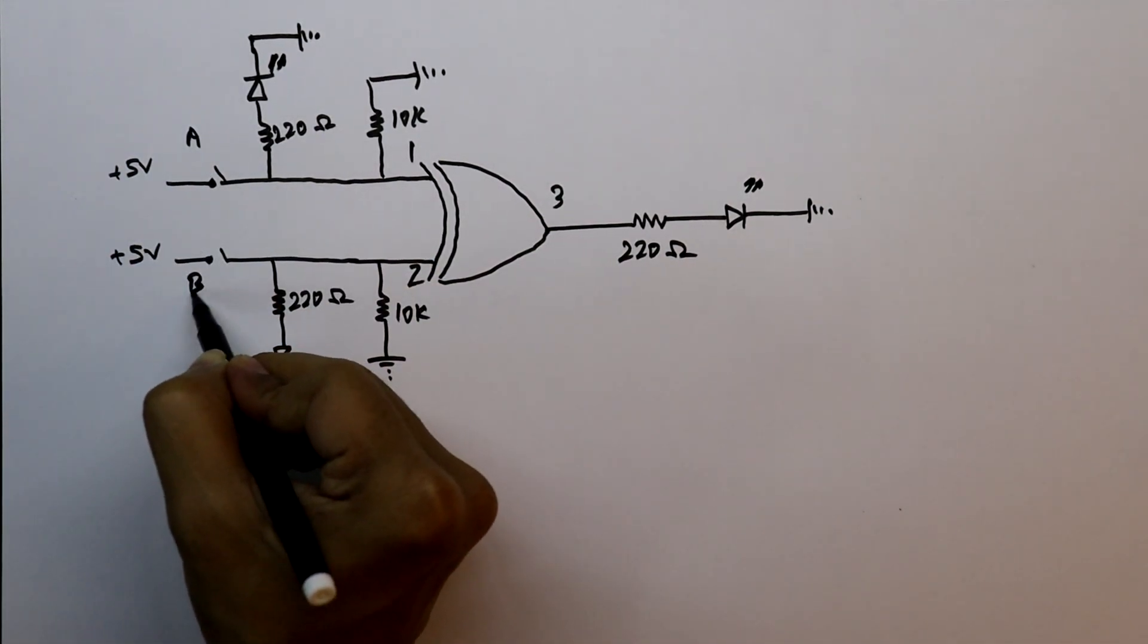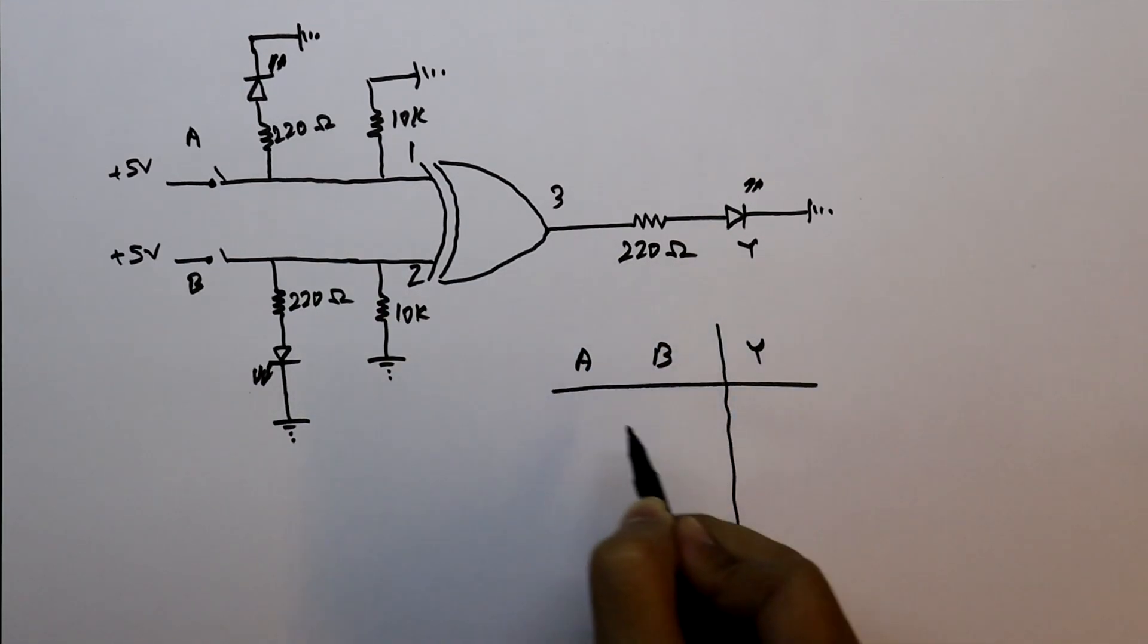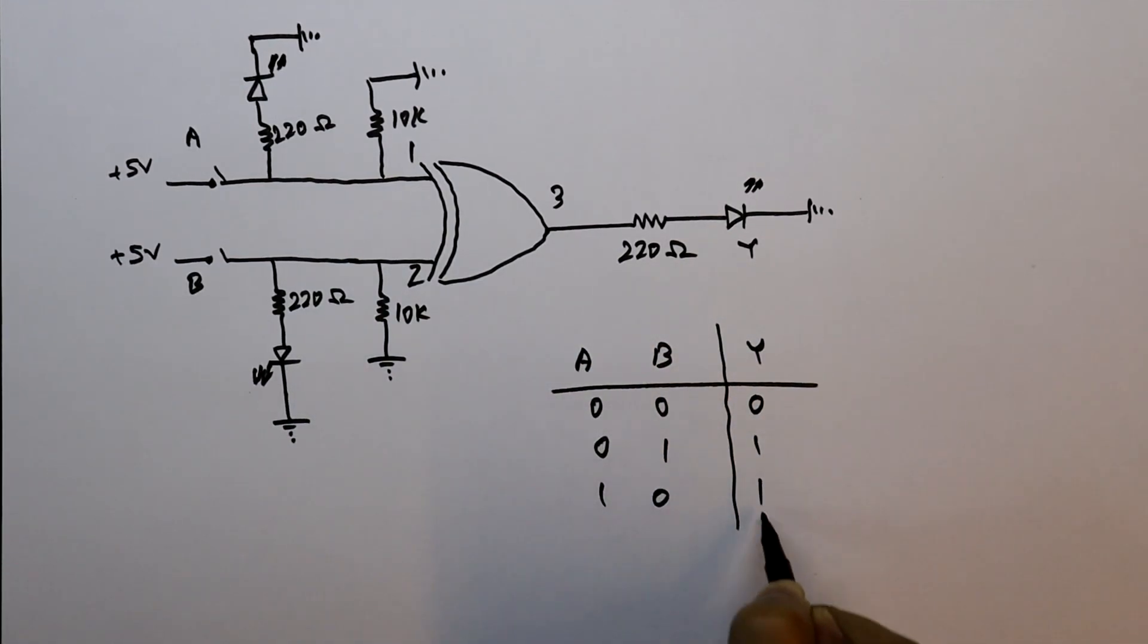Input A, input B, and Y is the output. And this is the truth table of XOR. Now we will see this in practical.